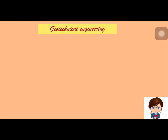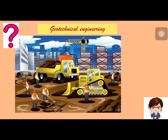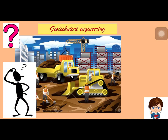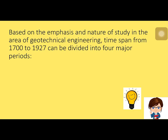After encountering several foundation-related problems during construction over centuries past, engineers and scientists began to address the properties and behavior of soil in a more methodological manner starting in the early part of the 18th century. Based on the emphasis and nature of study in geotechnical engineering, the time span from 1700 to 1927 can be divided into four major periods: pre-classical (1700–1776 AD), classical soil mechanics phase 1 (1776 AD), classical soil mechanics phase 2 (1856–1910), and modern soil mechanics (1910–1927).